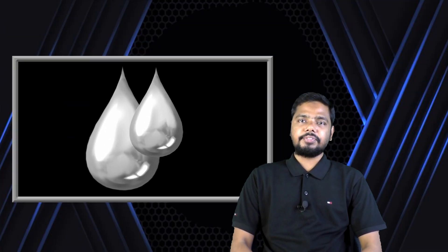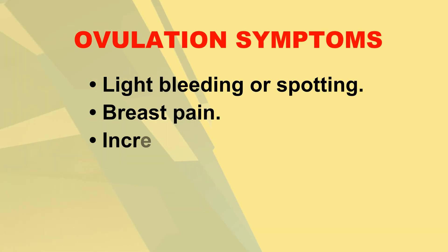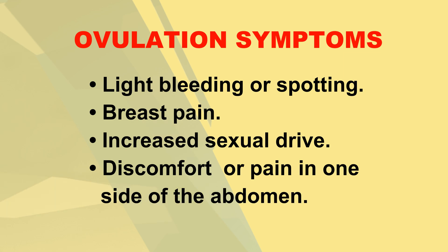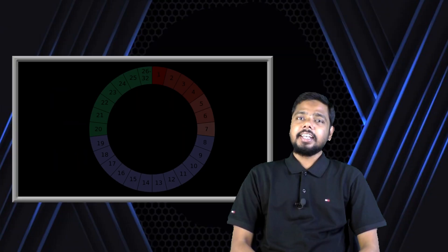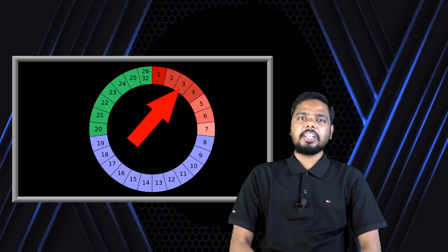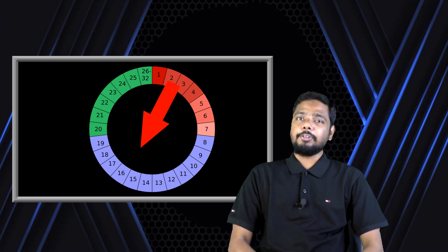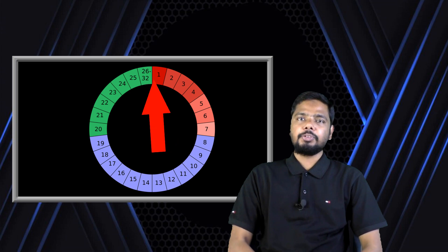Ovulation can cause a type of vaginal discharge. This discharge is frequently clear and silky. Most women may experience a few common symptoms during ovulation, such as light bleeding or spotting, breast pain, increased sexual drive, and discomfort or pain on one side of the abdomen.